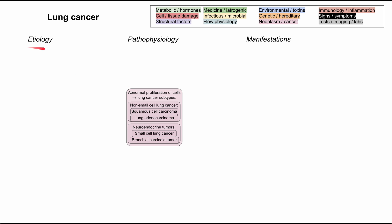The most common etiology we probably all know about is tobacco smoking, associated with 80 to 90 percent of lung cancers. The risk is determined by pack-years smoked. For instance, one pack a day for one year is a one-pack-year history; one pack a day for 10 years is 10 pack-years; two packs a day for 10 years is 20 pack-years.